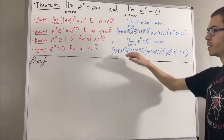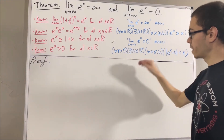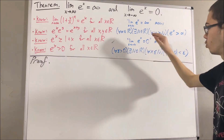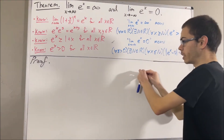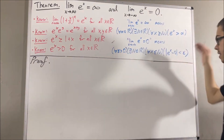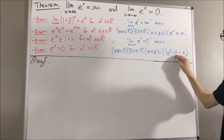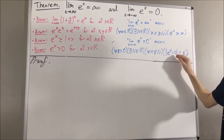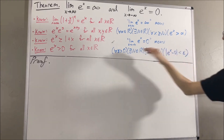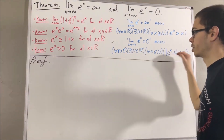To put this another way, if you give me any positive real number epsilon, I guarantee you I can find a real number capital N, such that if you look at the graph of e to the x everywhere to the left of capital N, the distance between e to the x and zero will always be at most epsilon. And you can do this for every positive real number epsilon.